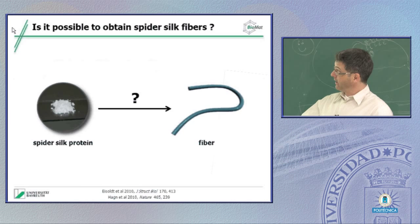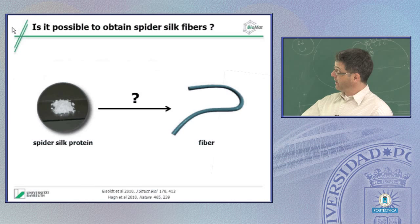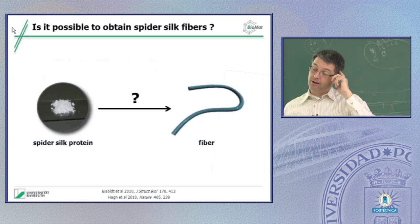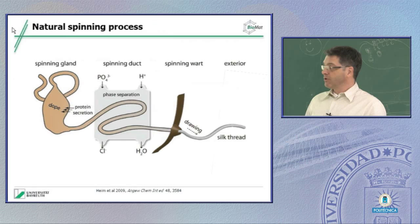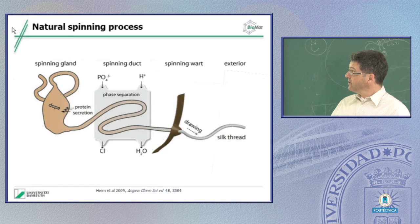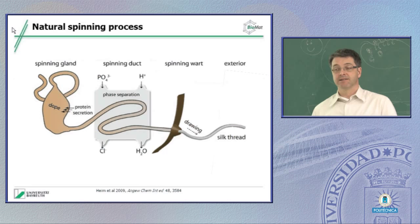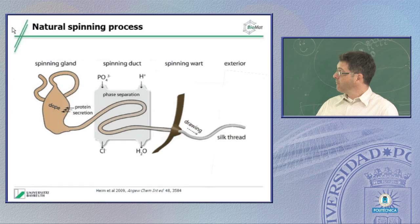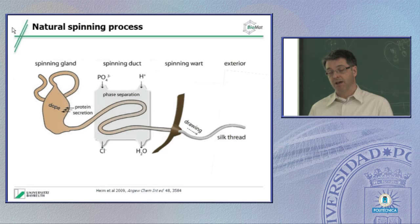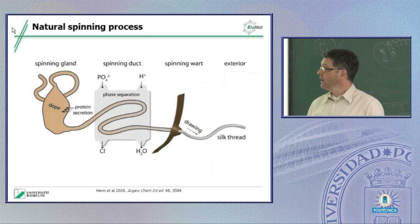How can this be transformed into a fiber? The key question first is how does the spider do that? This is a more nicely drawn cartoon of how silk processing occurs in spiders. This is one of the glands - it could be, for instance, a major ampullate gland. We have surrounding this gland epithelial cells, and these epithelial cells produce the silk proteins. The silk proteins are secreted and form the silk dope with very high protein concentrations, which can be up to 50 percent weight per volume. This is an aqueous solution containing the silk proteins with structure in the terminal regions, but no structure in the huge repetitive core.